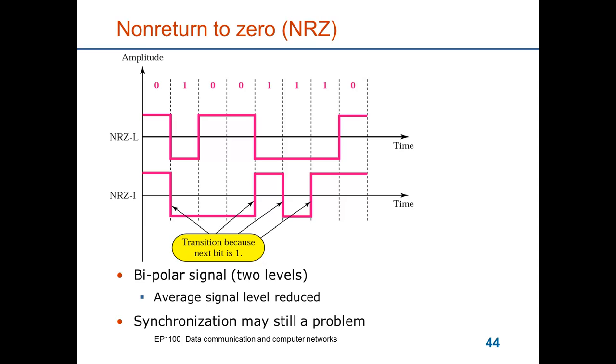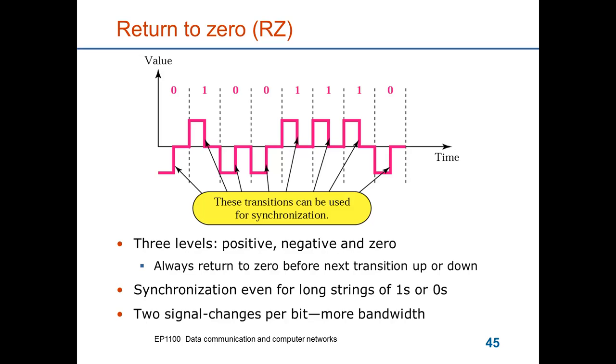So here's another line code called return to zero, which always have a transition, in order to make sure that there's clocking information to the receiver. We use two signal elements per bit interval, so one bit is encoded as two elements. The first element is either positive or negative, and the second element is always zero, which means that in every interval there's always a transition going from positive to zero or going from negative to zero. So in terms of DC component, it's similar to NRZ, but it has a better clocking frequency. However, the baud rate is now twice the bit rate, because we have two signal elements for each bit transmitted.